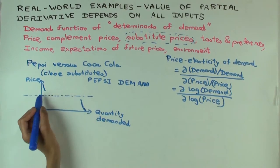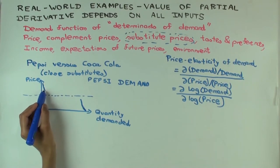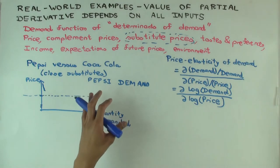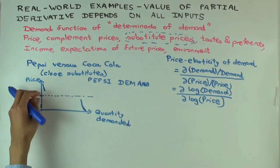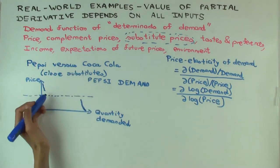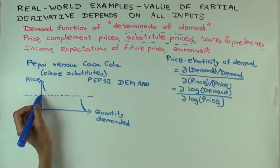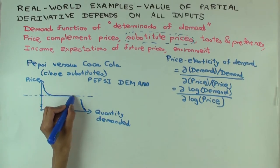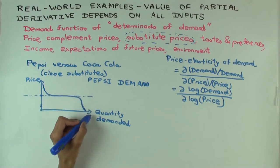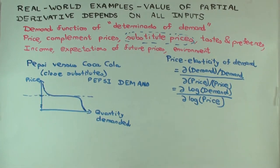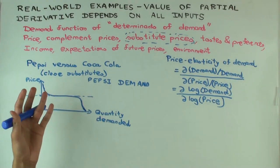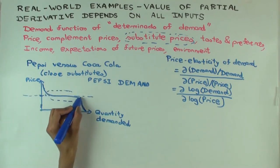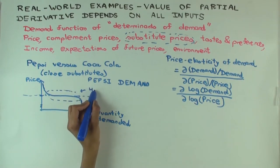What happens when the Pepsi price comes close to the price of Coca-Cola? That's where a lot of people will choose to switch. For those for whom these are perfect substitutes, they'll switch exactly at that price, while others with a mild preference will switch slightly above or below. The upshot is that near the Coca-Cola price is where quantity demanded moves very rapidly — the curve becomes very horizontal, meaning high price elasticity. This is the high price elasticity region.